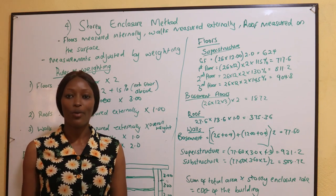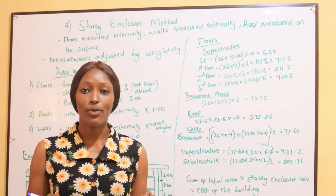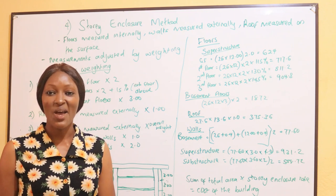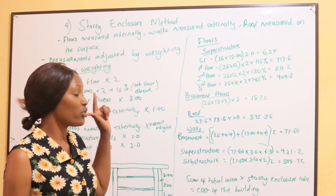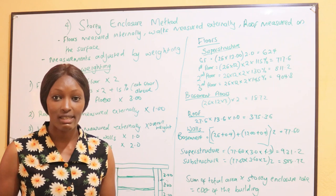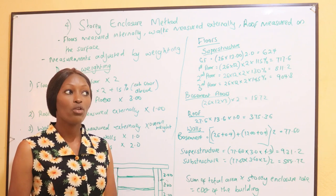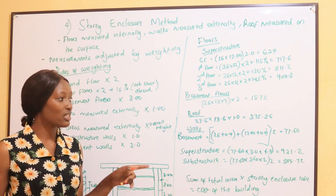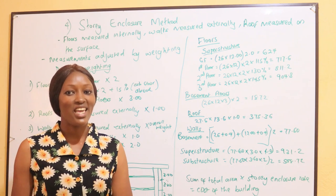The fourth method of approximate estimation is the story enclosure method. This is a more advanced method. We started with the functional unit method, came to the floor area method, then the cubic method, and now we are on the story enclosure method. This method considers the difference in height of buildings, the height of basements, and the walls. It considers separately the floors, the walls, and the roofs, making it more accurate than the other methods.